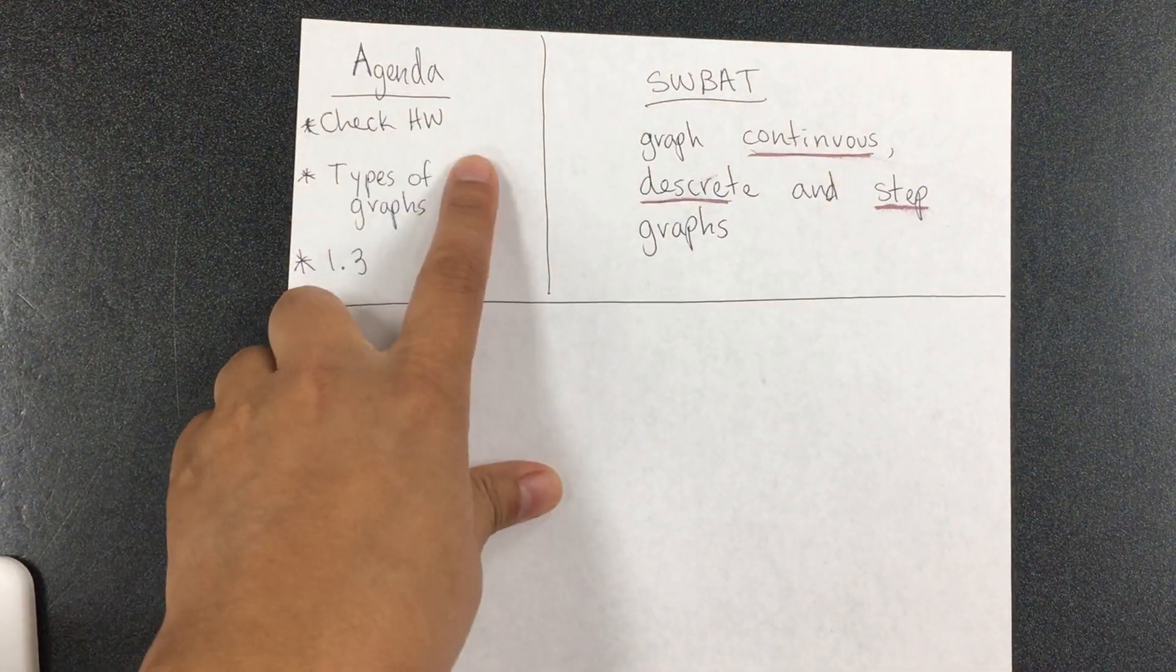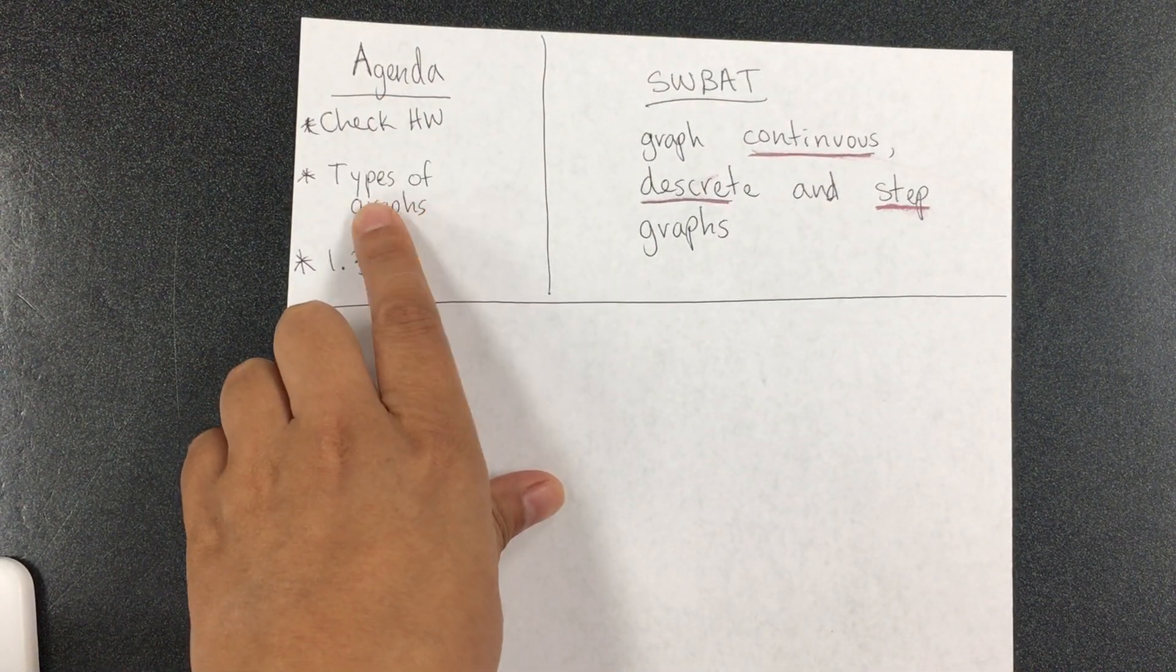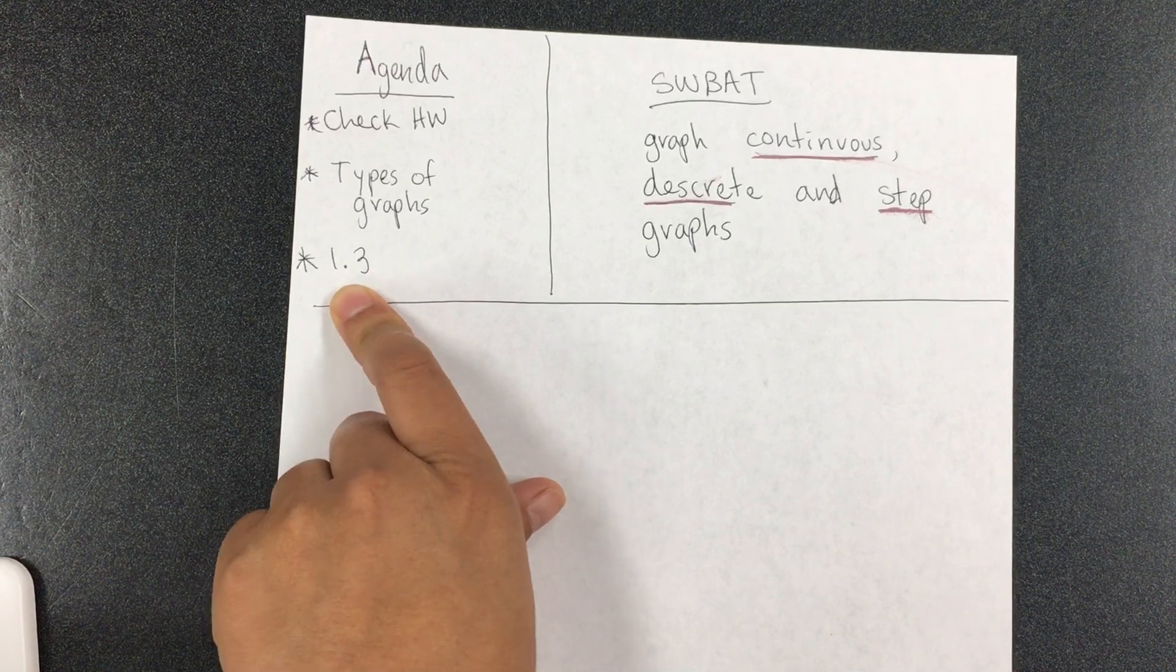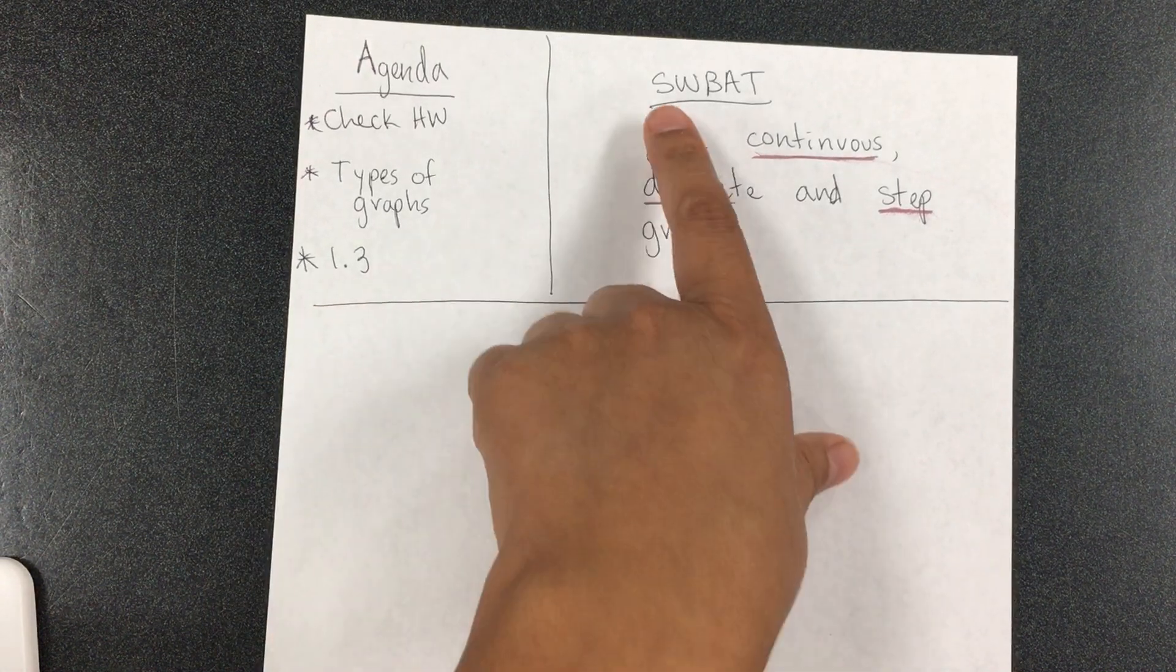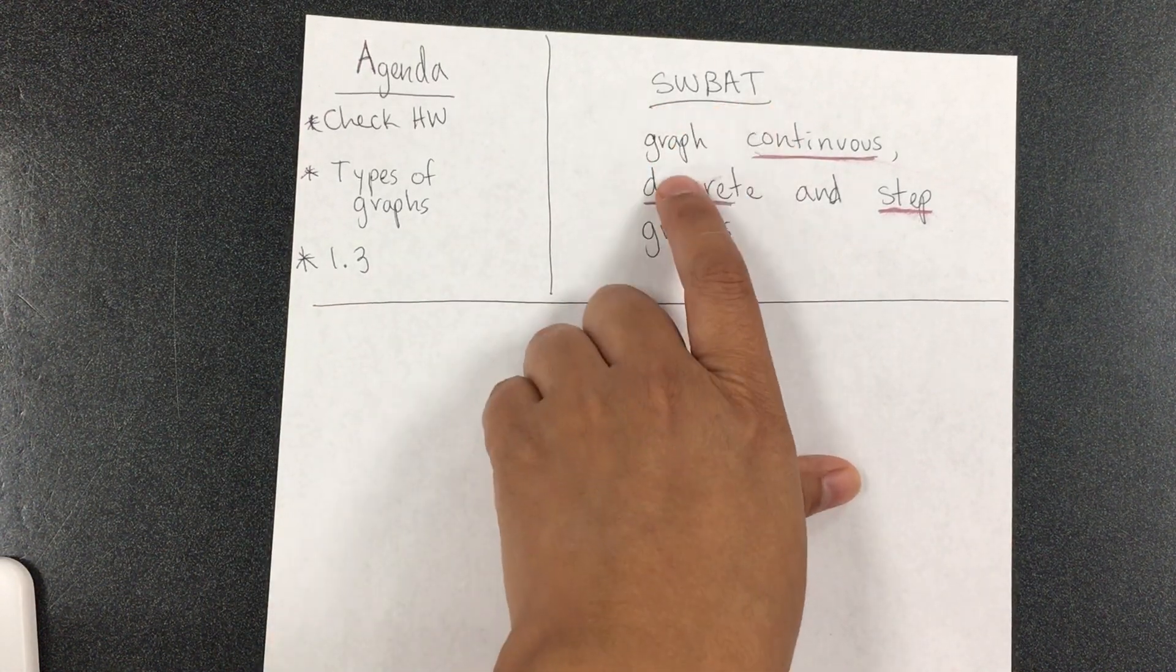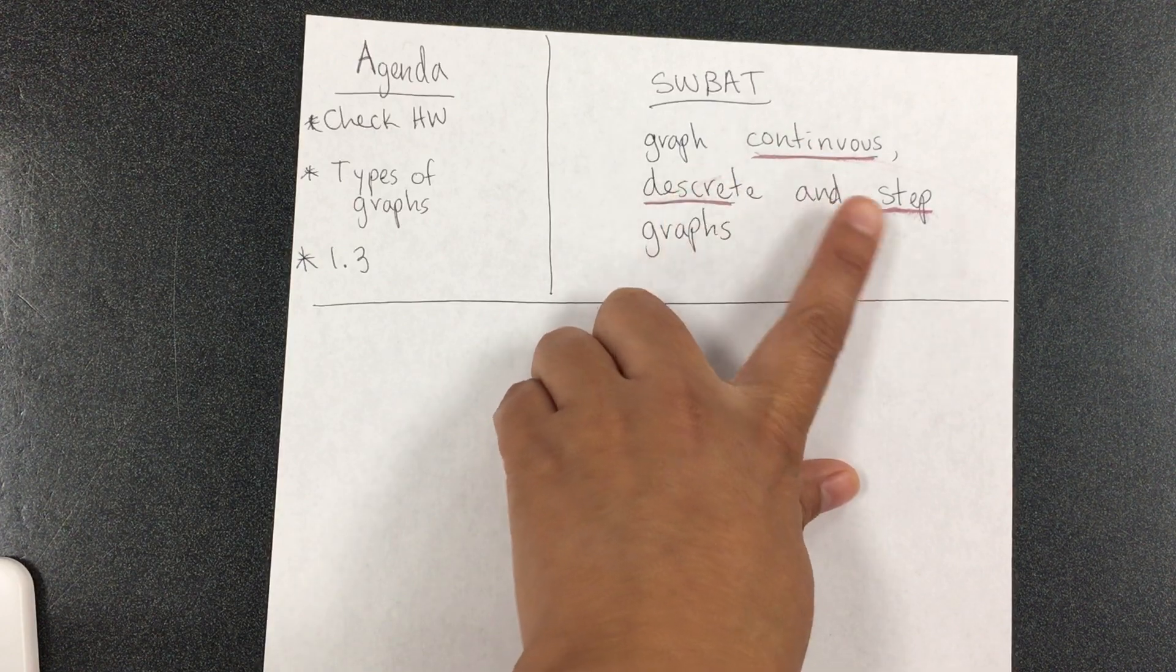Hello students, today's agenda is to check homework. We'll be learning about different types of graphs and you will be able to work on 1.3. Today students will be able to graph continuous, discrete, and step graphs. We're going to come up with real scenarios, things that really happen.